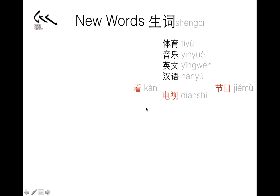So to watch a TV program: 看电视节目. To watch the sports program: 看体育节目. To watch the music program: 看音乐节目. To watch the English program: 看英文节目. To watch the Chinese program: 看汉语节目.